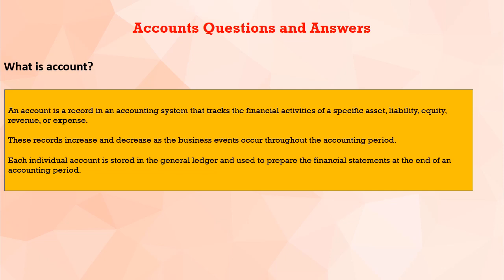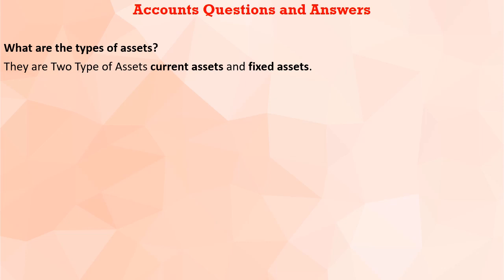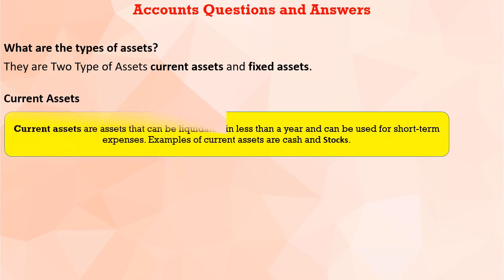There are two types of assets — current assets and fixed assets. What is a current asset? A current asset can be liquidated in less than a year and can be used for short-term expenses. Examples of current assets are cash and stocks. A current asset means we can easily convert it to cash — that is for short-term expenses.